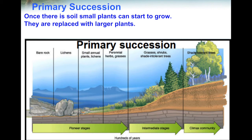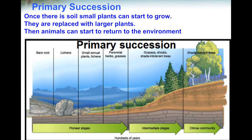Now that we have small plants replaced by larger plants, we can also start to bring in the animals. Animals that eat the plants can be there, and then larger animals that eat the smaller animals can also return. That's primary succession — a group of changes that occur when there is nothing left in the area. After a while, things start to get back into balance. The other type of succession is called secondary succession.